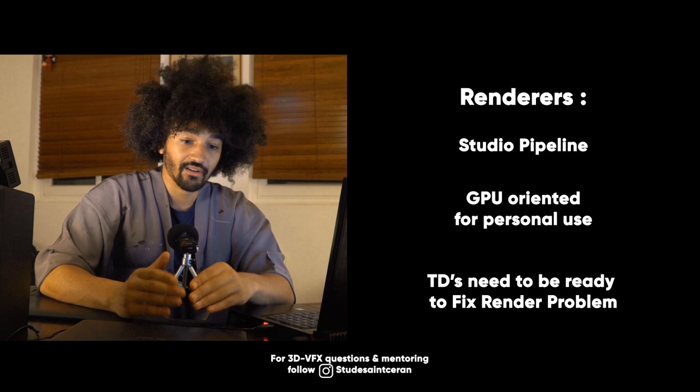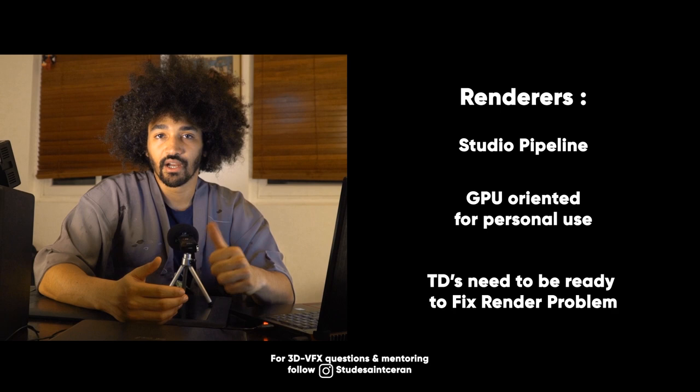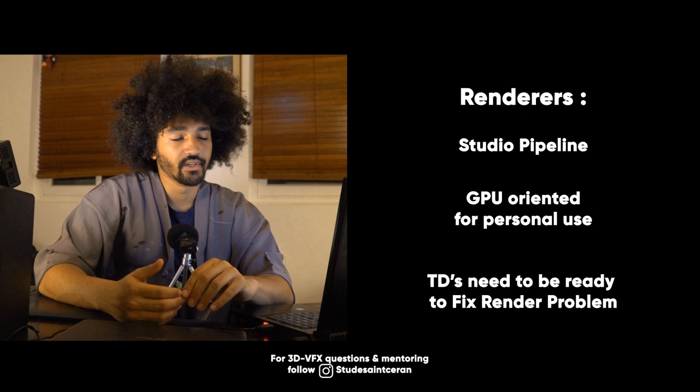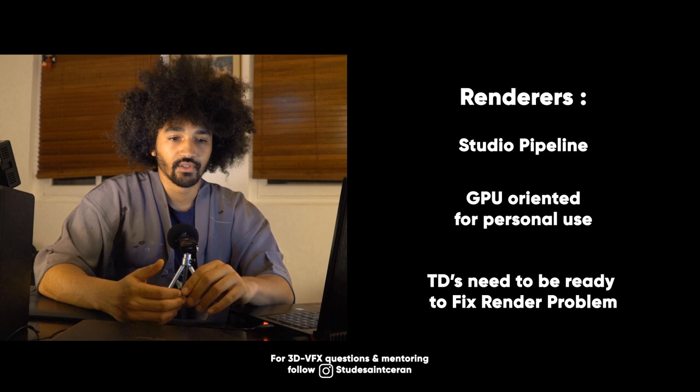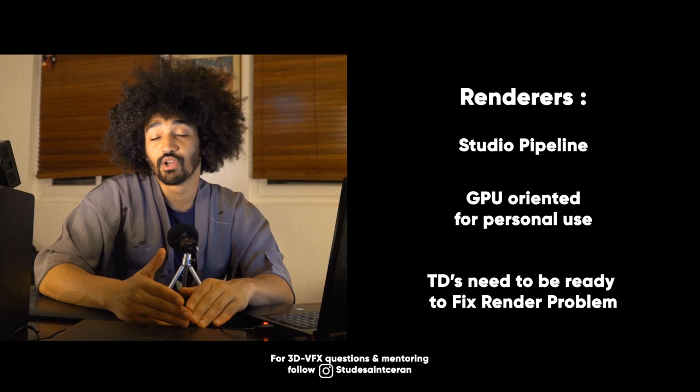When you're a lighting TD, you're going to have many technical problems to fix, so you need to understand the algorithms behind the lighting in the renderer. Renderers you can name include V-Ray, Arnold, Redshift, RenderMan, Katana, Guerrilla Render, Maxwell — there are a lot. They each have their own specifics, and there's a lot of documentation for every renderer so you can understand what's happening.